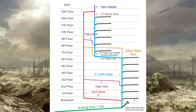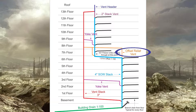Much like a Vent Stack or the Yoke Vent, an Offset Relief Vent is designed to stop the buildup of pressure inside a Soil Away Stack when there's an offset in the Soil Away Stack. You can see right in the middle of this picture there is an offset in the Soil Away Stack, and there is an offset relief vent in the orange piping coming off of that. Now let's talk about the code requirements on how to install this.